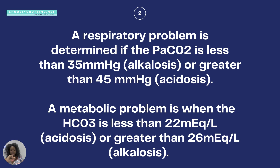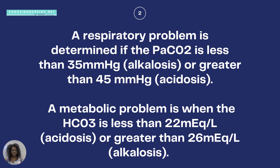If CO2 is too low, that's a respiratory alkalotic problem. For metabolic problems, look at the bicarb levels: bicarb less than 22 is metabolic acidosis, and bicarb greater than 26 is metabolic alkalosis. Essentially, you determine respiratory vs. metabolic by looking at which of these lab values — CO2 or bicarb — is in the same state as the pH.